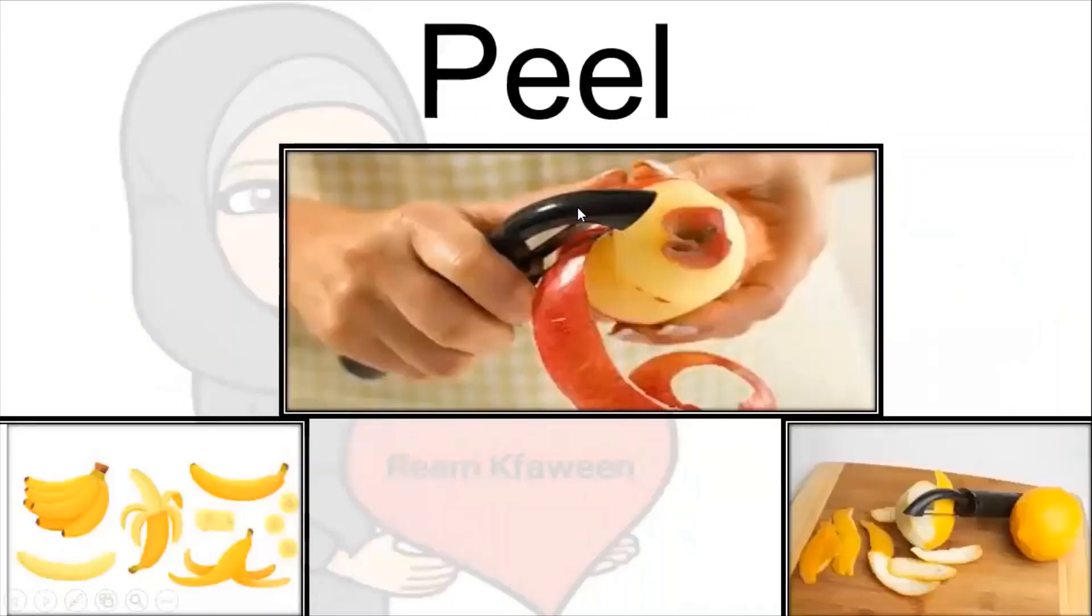Now, look at this picture. What is the man doing? Excellent. If we remove the skin of a fruit, we say this action, peel. This action is called peel. Peel. So, peel is removing the skin of a fruit or an object. Look at this banana. Look at this orange. This is called peel.